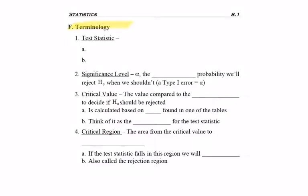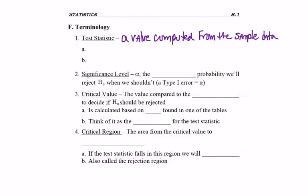Now we're going to look at some terminology for a hypothesis test. The first key phrase you'll hear a lot about is the test statistic, and this is a value computed from the sample data. So if we're using sample data, we'll either be using x bar, p hat, or s — the sample mean, proportion, or standard deviation.